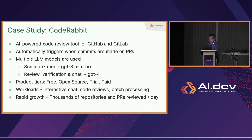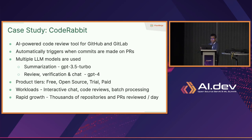Let's look at a case study. There's a company called CodeRabbit, a code review tool on GitHub and GitLab. Each time you open a pull request, they automatically review the code, and on each commit they review the latest changes. They use multiple LLM models — summarization with GPT-3.5 Turbo, and complex tasks like code reviews, code verification, or chat are powered by GPT-4. They also have different product tiers: free, open source, trial, and paid users.